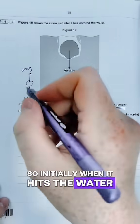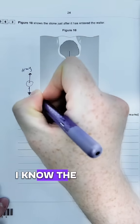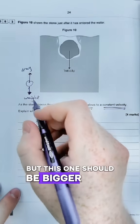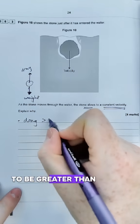So initially when it hits the water, you're going to have drag is a little bit bigger than weight. I know the arrows look kind of similar there, but this one should be bigger than this one. So that's our first mark there is that drag has to be greater than weight.